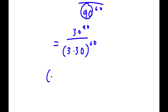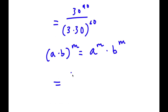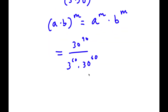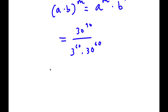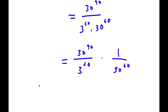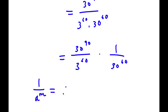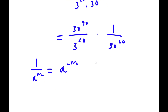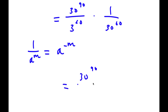Now, if I have something in the form a times b to the power of m, this is equal to a to the power of m times b to the power of m. So in this case, 3 times 30 to the power of 60 equals 3 to the power of 60 times 30 to the power of 60. And if I have something in the form 1 over a to the power of m, it's the same thing as a to the power of negative m. So 1 over 30 to the power of 60 equals 30 to the power of negative 60.